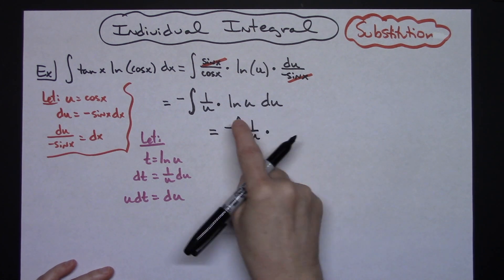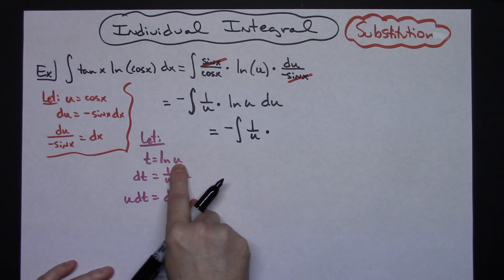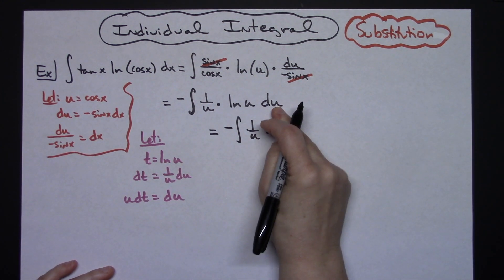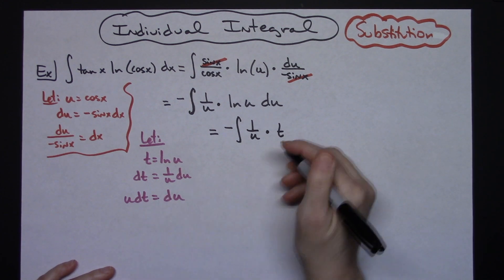That's going to stay there. Alright, natural log of u, I'm going to put a t in there to replace that. Du is going to be u dt.